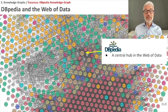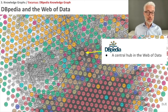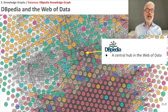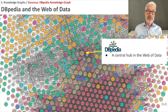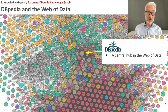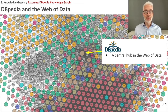DBpedia is one of the central hubs within the web of data, which means many of the other knowledge graphs interconnected in the web of data refer to DBpedia as a reference. Entities which are denoted in DBpedia, like in Wikipedia or an encyclopedia, also serve as a reference for other knowledge graphs and datasets which have additional statements and knowledge about these entities. So it's a central hub of the web of data.